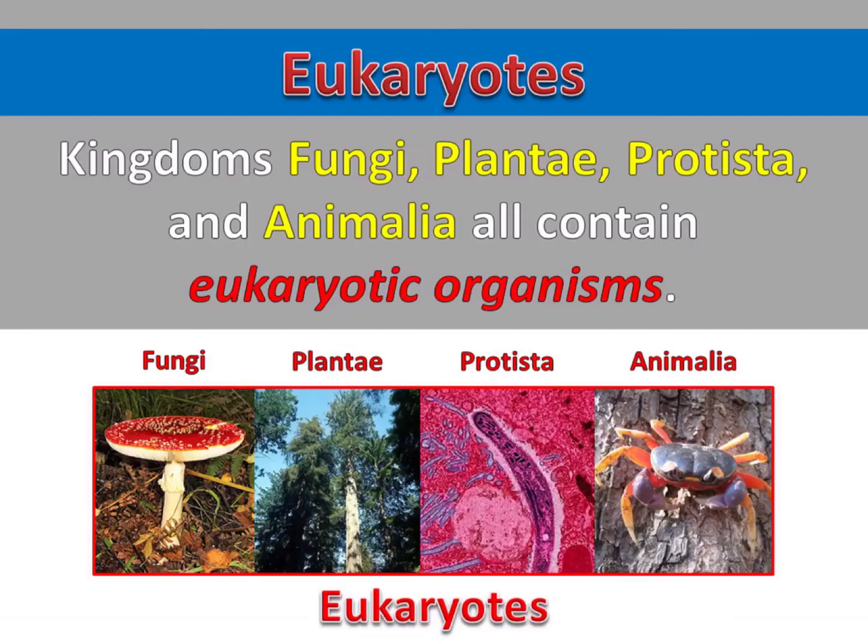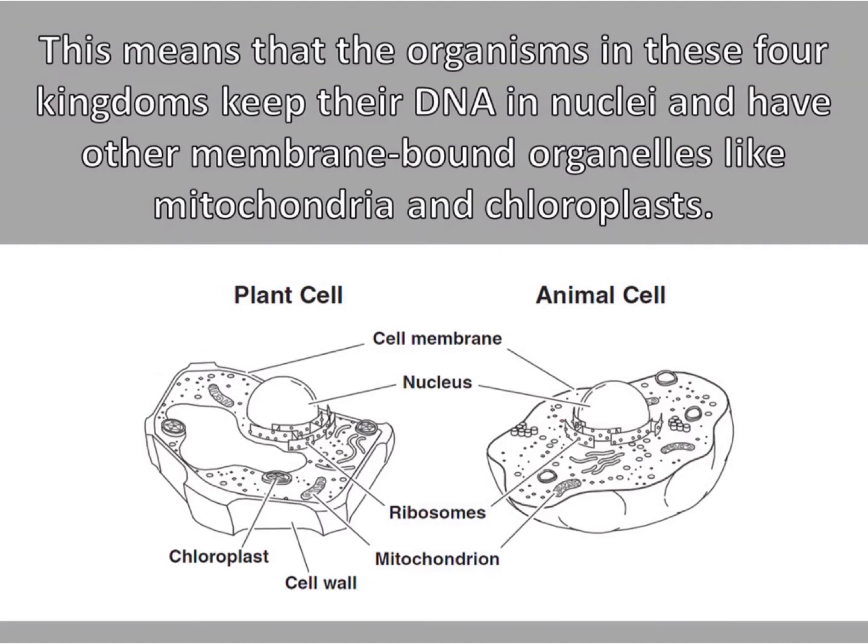Kingdoms Fungi, Plantae, Protista, and Animalia all contain eukaryotic organisms. This means that the organisms in these four kingdoms keep their DNA in nuclei and have other membrane-bound organelles like mitochondria and chloroplasts.